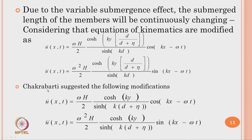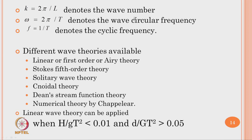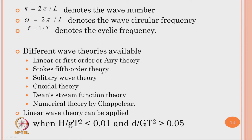In Chakravarti's modification, k is the wave number, ω is the wave circular frequency, and f is the cyclic frequency (inverse of the wave period). To estimate water particle kinematics — horizontal and vertical velocity and acceleration — different wave theories are available: linear or first-order Airy theory, Stokes fifth-order theory, solitary wave theory, cnoidal wave theory, Dean's stream function theory, and numerical theory by Chaplin.